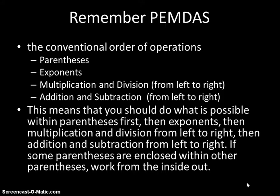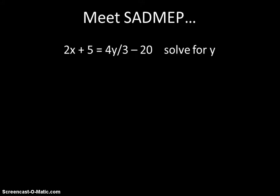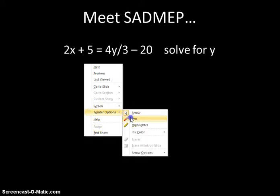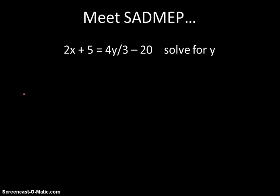When you're trying to solve for a specific variable, what if we have mostly variables? In this case I gave you two variables and we're solving for y. I say on the top here meet SADMEP - it's PEMDAS backwards. If we're trying to isolate some variable, in this case y, we end up doing PEMDAS in reverse.